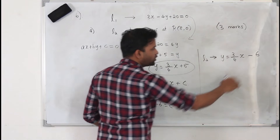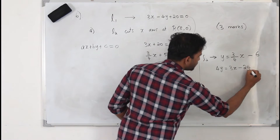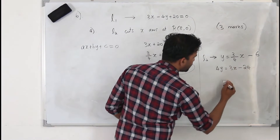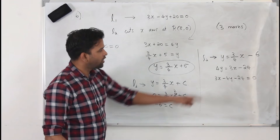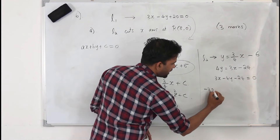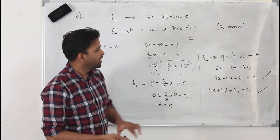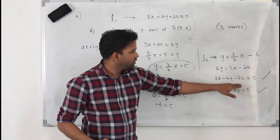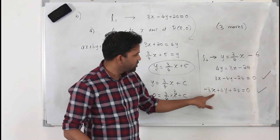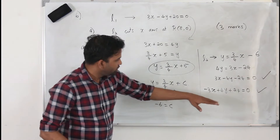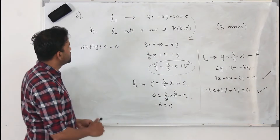Take the denominator 4 and multiply throughout by 4: it becomes 4y equals 3x minus 24. Bringing everything to one side gives 3x minus 4y minus 24 equals 0. Alternatively, minus 3x plus 4y plus 24 equals 0. Both are correct answers — all coefficients 3, -4, -24 are integers. Writing this equation clearly earns you 3 marks; stopping at y equals 3/4 x minus 6 will likely lose you 1 mark. This completes Part A.